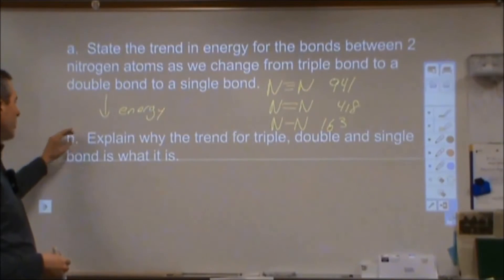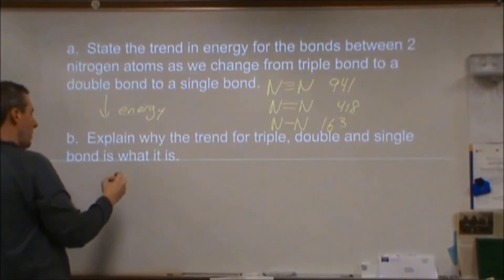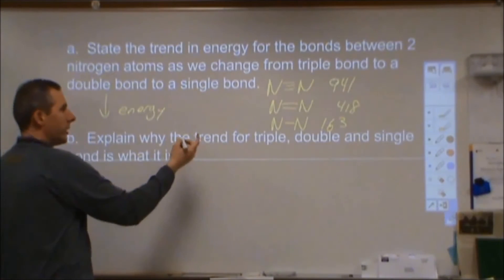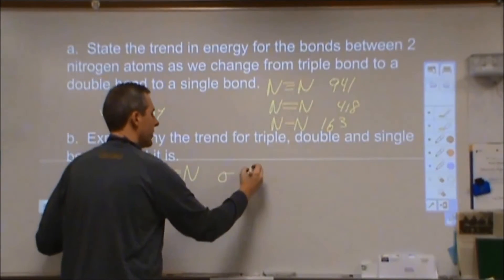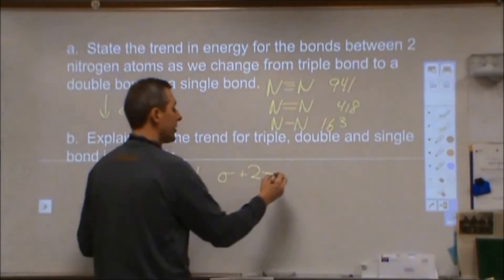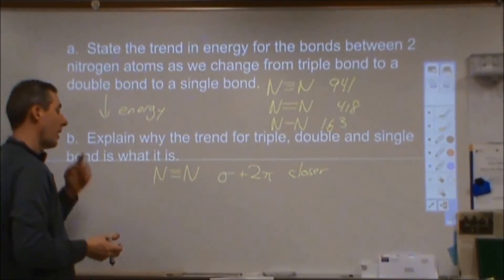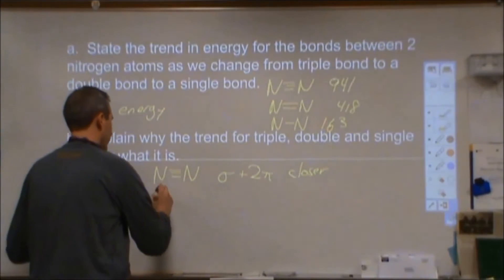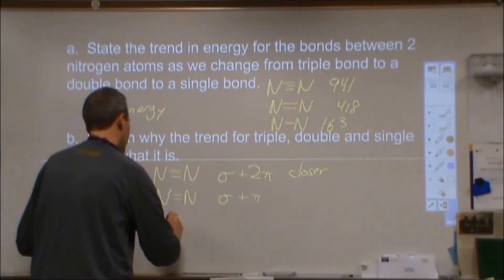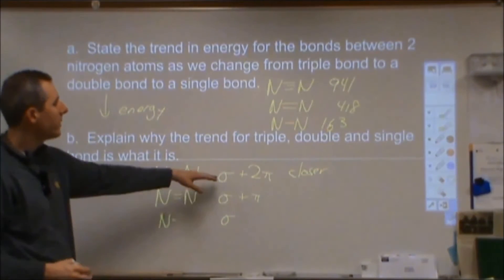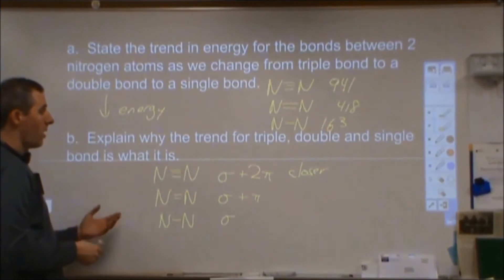Part B asks us to explain why that trend exists — why does bond energy go down from triple to double to single bond? For the triple bond, we have a sigma and two pi bonds. Because of those pi bonding interactions, the atoms are closer together and we see a greater force of attraction due to that proximity and the greater amount of charge between the two atoms. For a nitrogen double bond we have a sigma and one pi bond, so the atoms are closer than in a single bond. Having multiple bonds creates more interactions and brings the atoms closer together.